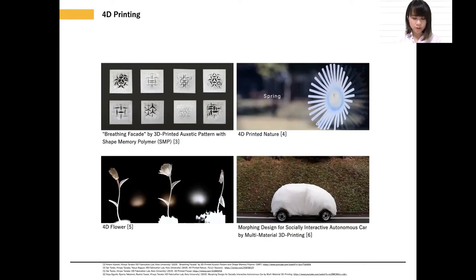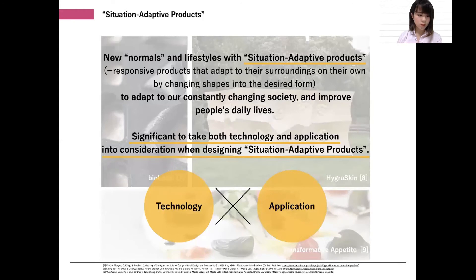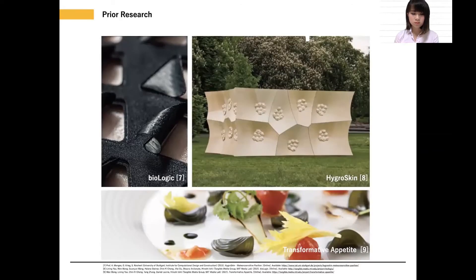These are past works done by our lab members. We believe that these social issues can be solved with 4D printing — a technology referred to as 3D printing that uses special materials and sophisticated designs that can change structure post-production by reacting to environmental parameters. This feature allows 4D printed products to adapt to their surrounding environment, thus improving people's daily lives. We call these environment-responsive products situation-adaptive products. Our goal is to propose new normals and lifestyles with situation-adaptive products to adapt to our constantly changing society. The shapes these products change into depend greatly on the situation they are used in, so it is significant to take both technology and application into consideration when designing.